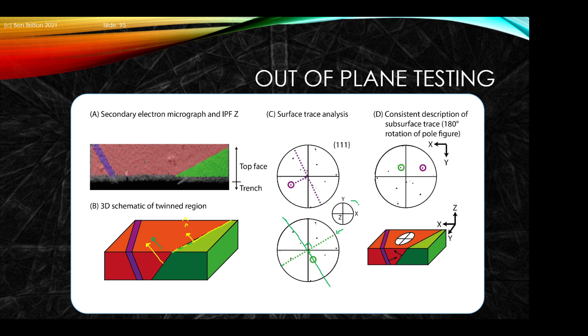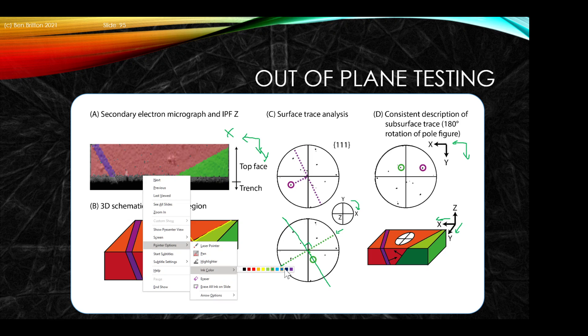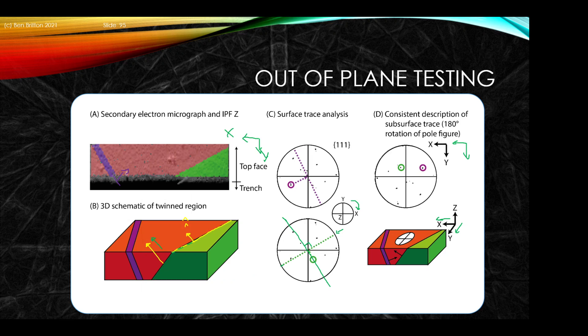Such that x is pointing in this direction, y is pointing downwards, and we can now see that relates our sample coordinate system with x and y with up here, x and y. Such that now we have that plane normal that is located, and if we rotate 180 degrees, this would now be sitting in the correct location. We can check this also for the second one in this example. The subsurface trace is pointing over there, and so the subsurface trace is over here. Again, if we rotate this by 180 degrees, it's in the correct location. This is the consistent set that fits our mapping for this example.